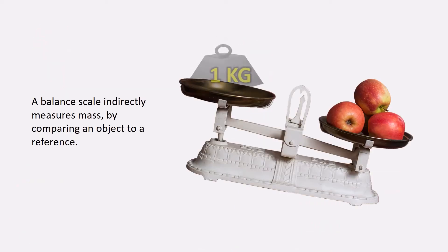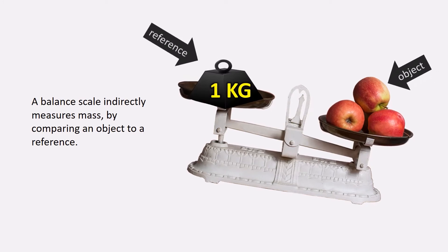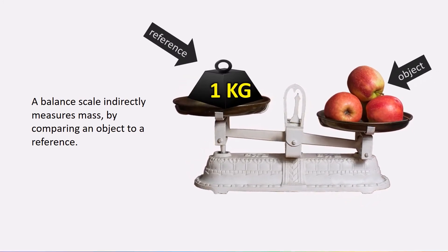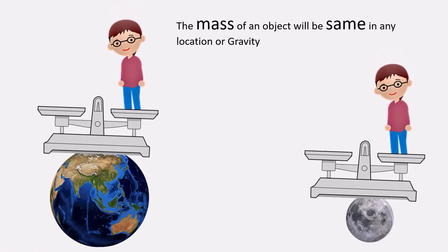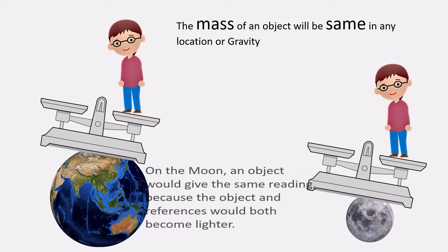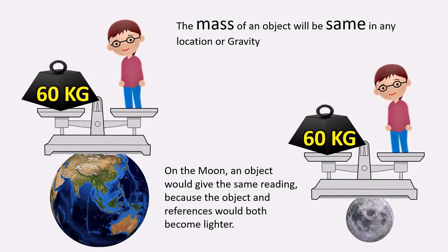A balance scale indirectly measures mass by comparing an object to your reference. The mass of an object will be the same irrespective of the location or the gravity. On the moon, an object would give the same reading as on the earth because the object and references would both become lighter.